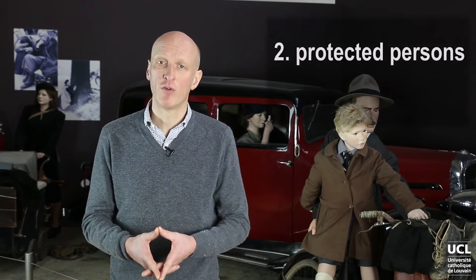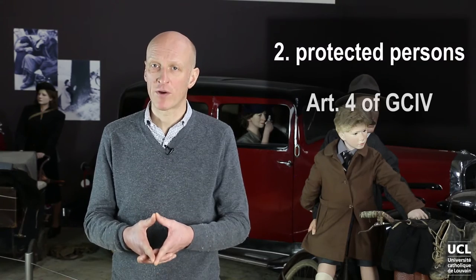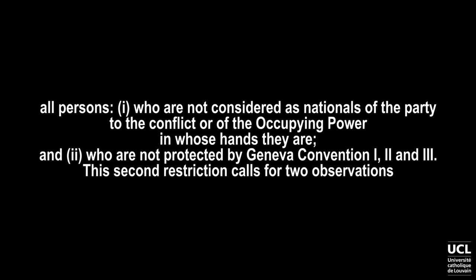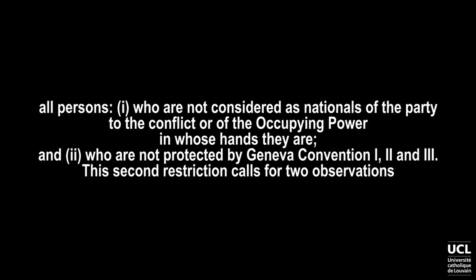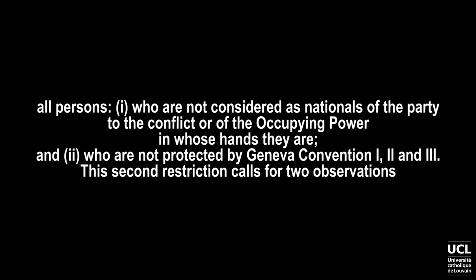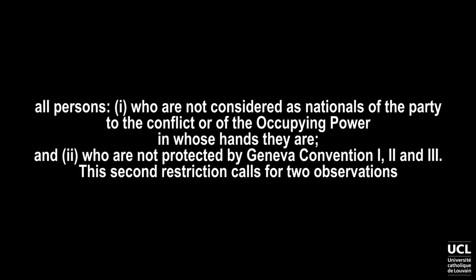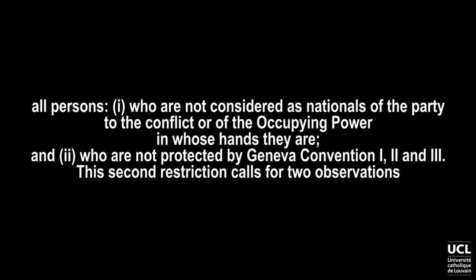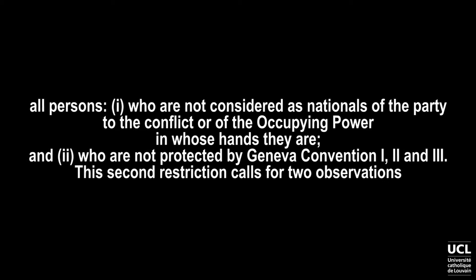The second restriction limits Part 3 of the Convention to protected persons. Protected persons, under Article 4 of Geneva Convention 4, are all persons who are not considered as nationals of the party to the conflict, or of the occupying power in whose hands they are, and who are not protected by Geneva Conventions 1, 2, and 3.